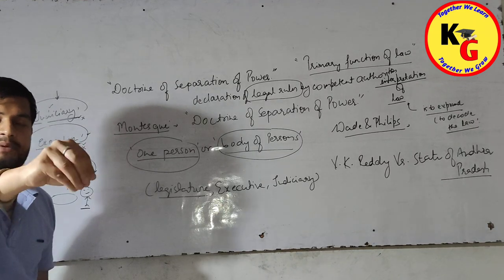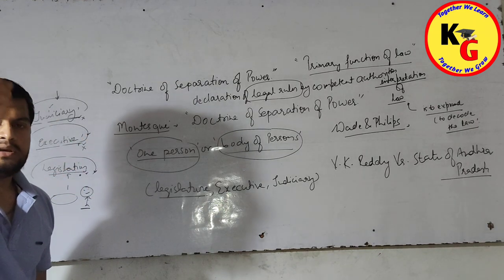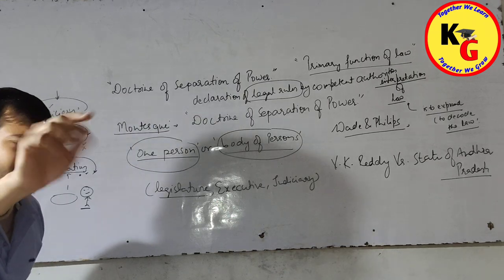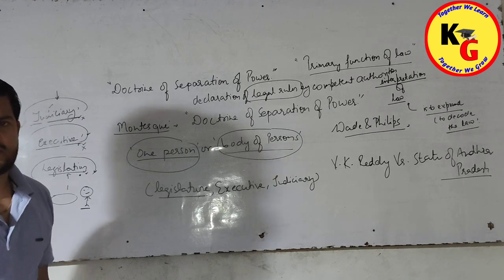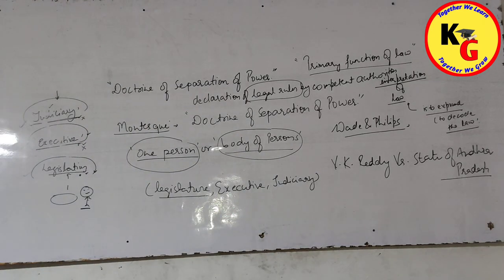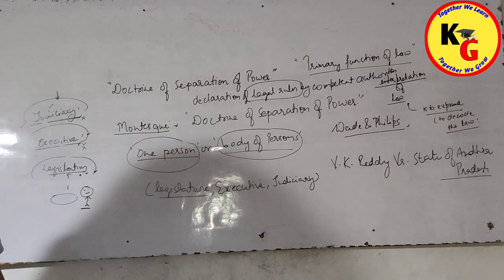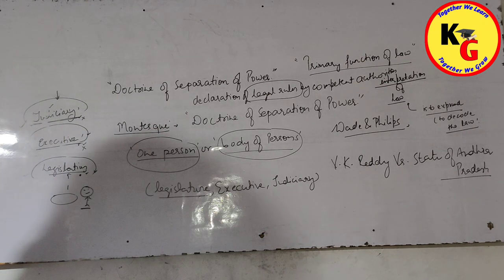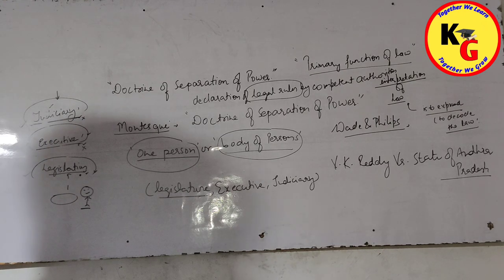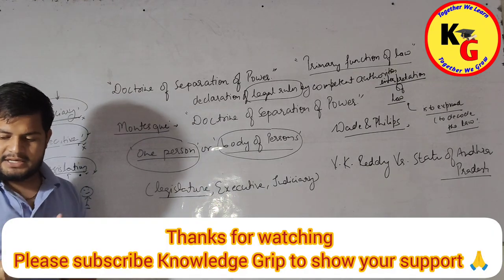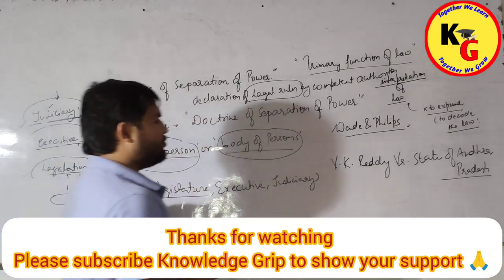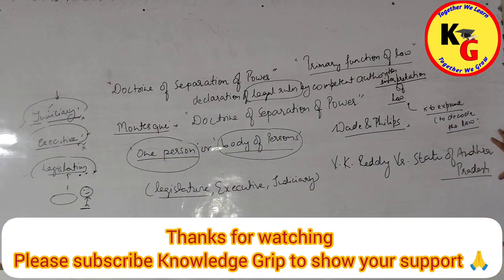Toh is tarah se jo courts hain unhein is baat ka khayal rakhna hoga ki unhein bhi within the ambit of constitution kaam karna hai. Unka jo kaam hai woh usi kaam par strong rahein aur woh kisi bhi tarah se legislature ke function mein kisi prakar se koi interference na karein. Interpretation ka kaam unka hai, toh woh interpretation ka kaam hi karein. Woh yeh ensure karein ki jo bhi laws banaye gaye hain legislature ke dwara - kya woh constitutional hain? Agar hain, toh koi problem judiciary ko nahi banaani chahiye. But policy matters, fiscal, educational or otherwise are best left to the judgment of executive. It needs to be remembered that courts cannot run the government. Toh judiciary ko yeh khayal rakhna hoga ki policy banana, fiscal, educational - yeh sab jo policies banane ka kaam hai woh executive ka hai aur judiciary kisi tarah se sarkar chalaane waali nahi hai. Yeh kaha gaya tha Supreme Court ke dwara in VK Reddy versus State of Andhra Pradesh.